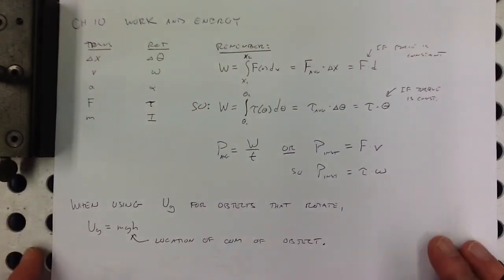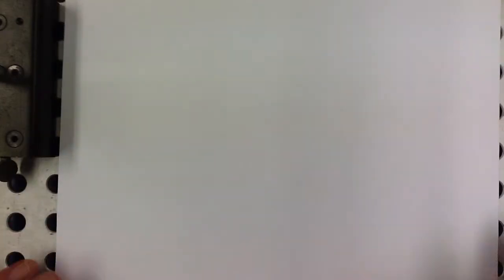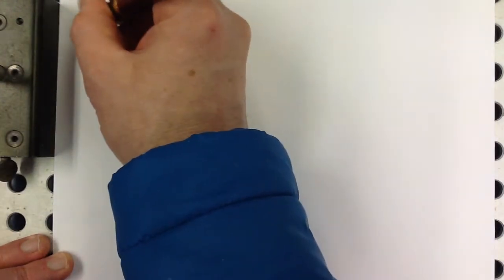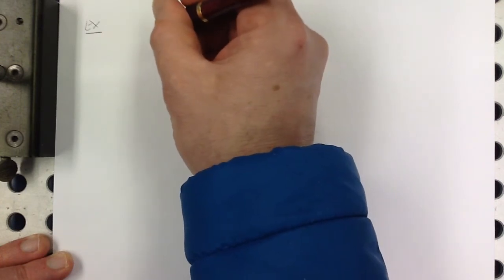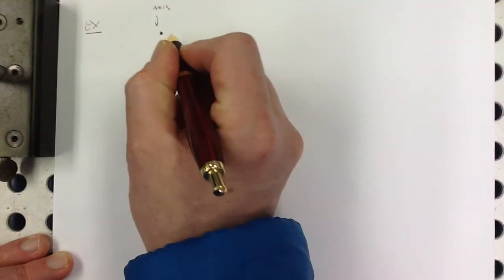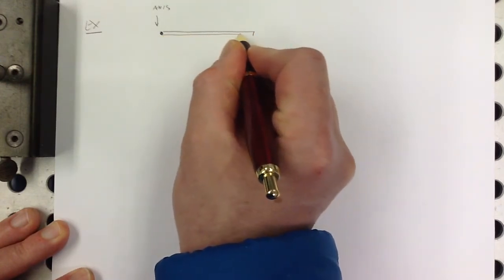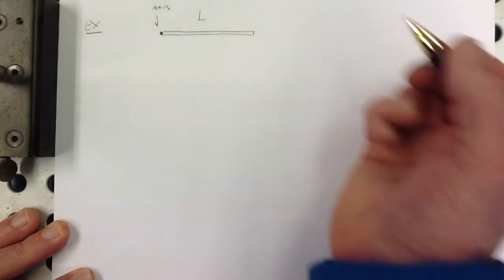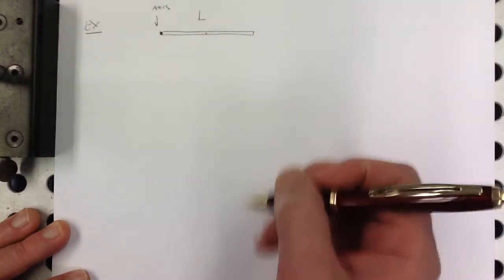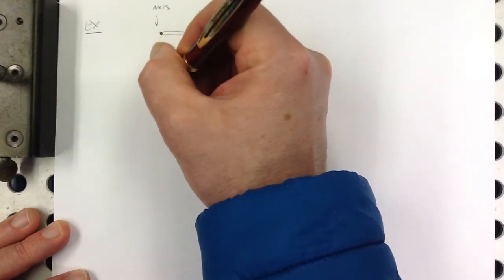I'll do one quick example for you that's kind of similar to some of the examples you're going to see in the homework. Let's say we have an axis here, and we have a rod of length L, uniform density, so the center of mass is right in the middle. We're going to let it go from here, from rest, and let it swing down all the way to here, assuming that there's no friction.